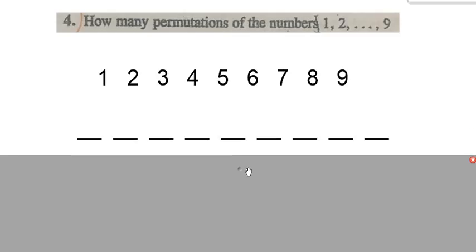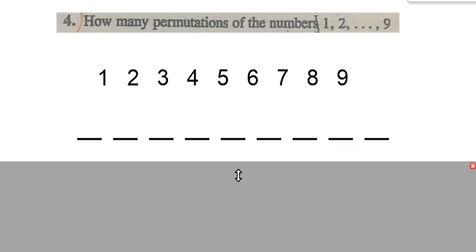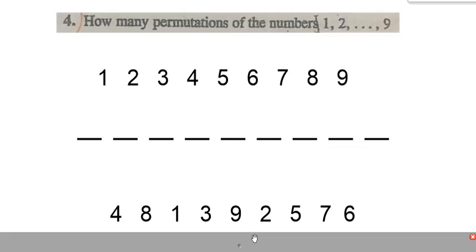So fundamentally, it asks how many permutations of the numbers 1, 2, 3, 4, 5, 6, 7, 8, 9 are there? So there's the numbers and we need to permutate them. Permutation is a fancy word meaning rearrange or put into different orders. So the way I like to approach it is I think about the nine positions that we need to fill with these nine objects. Here's one example of a permutation that I need to count — just the nine numbers rearranged.